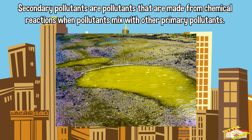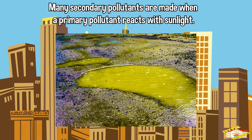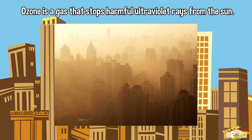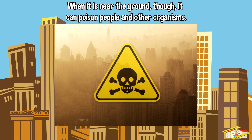Secondary pollutants are pollutants that are made from chemical reactions when pollutants mix with other primary pollutants. Many secondary pollutants are made when a primary pollutant reacts with sunlight. Ozone and smog are secondary pollutants. Ozone is a gas that stops harmful ultraviolet rays from the sun. When it is near the ground, though, it can poison people and other organisms.